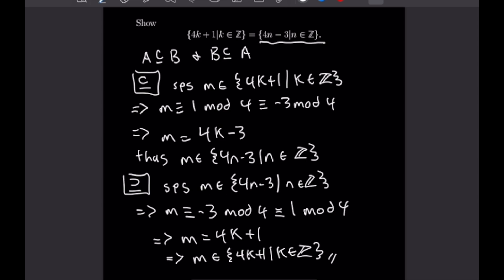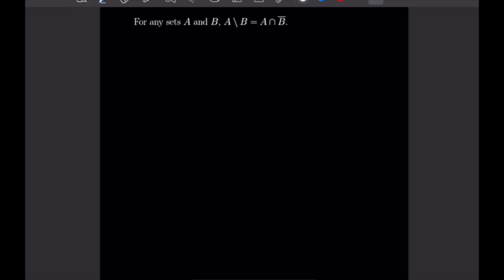Since we've shown that the left-hand side is a subset of the right-hand side and the right-hand side is a subset of the left-hand side, we have shown that these two sets are equal. Let's go ahead and get into our next proof.